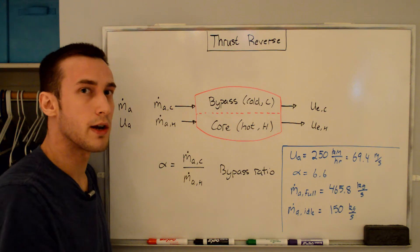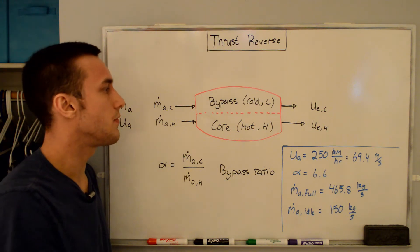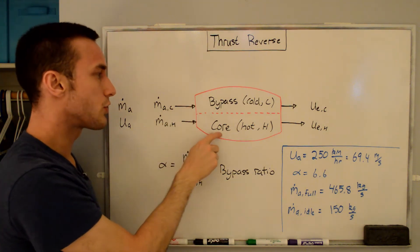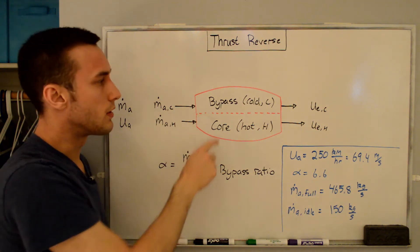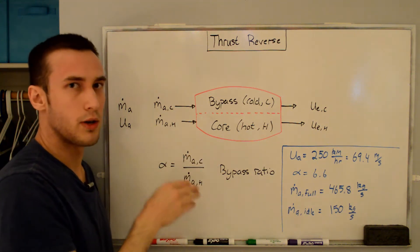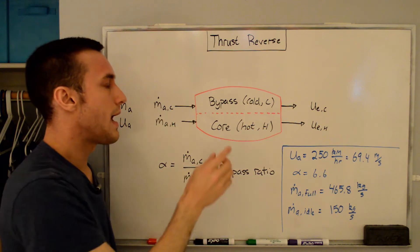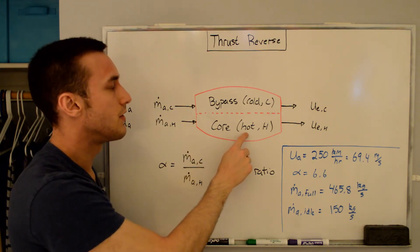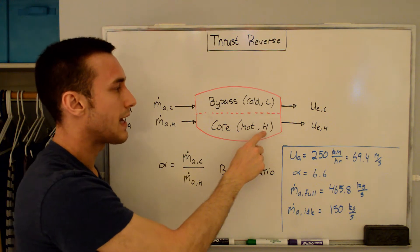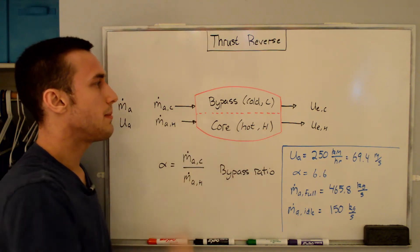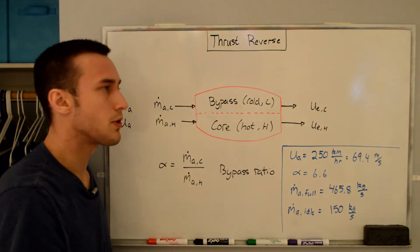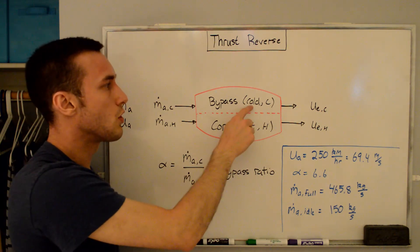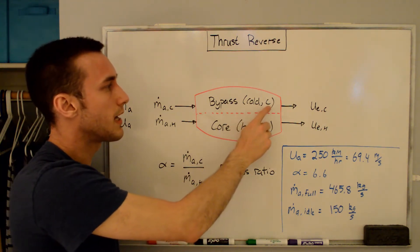Before we start calculating any thrust we need to know what the variables mean, so I've drawn this turbofan engine simplified schematic broken up into two streams. The first is the core stream — the air going through the core of the engine, through the compressor, combustion chamber and turbine, mixing with fuel and ignited, denoted with subscript H. The other stream is the bypass or cold stream, denoted by subscript C.